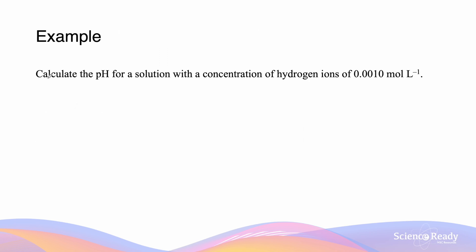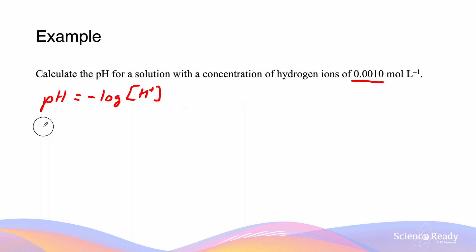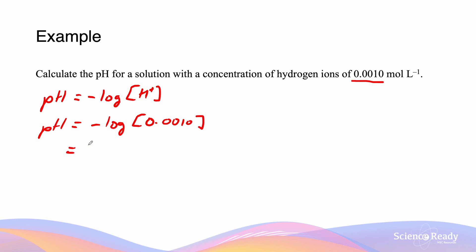In this first example, we're asked to calculate the pH for a solution with a hydrogen ion concentration of 0.0010 mol/L. The formula is pH equals the negative log of the H+ concentration. The hydrogen ion concentration is 0.0010, so pH equals the negative log of 0.0010, giving a value of 3.00 — expressed to two decimal places, since significant figures become decimal places when calculating pH.